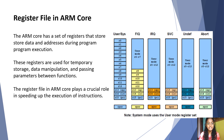The ARM core has a set of registers that stores data and addresses during program execution. These registers are useful for temporary storage, data manipulation, and passing parameters between functions.